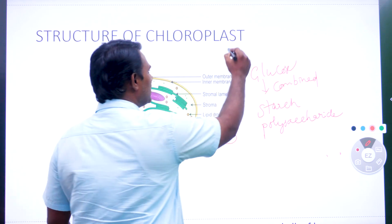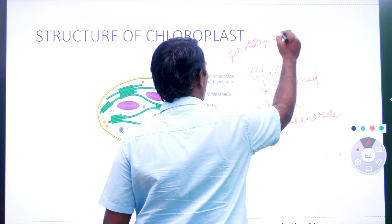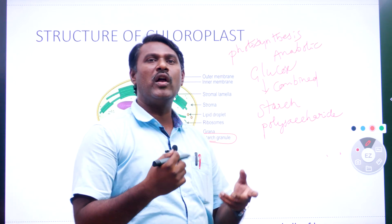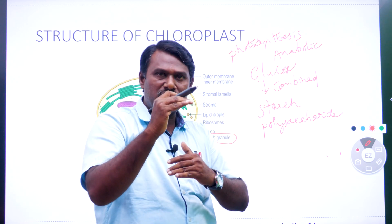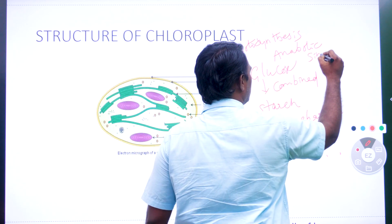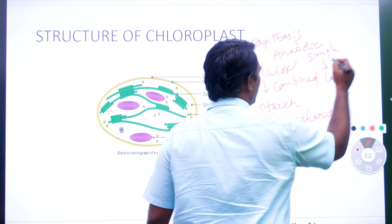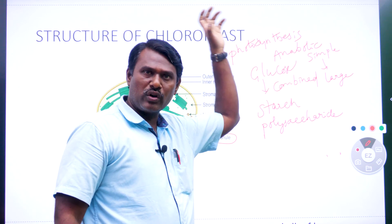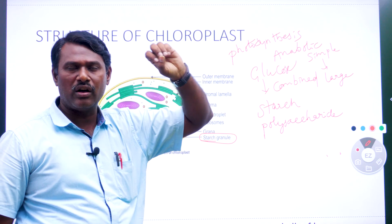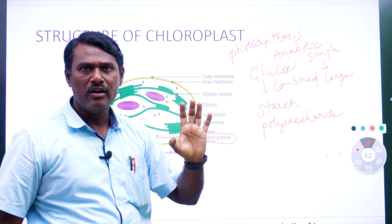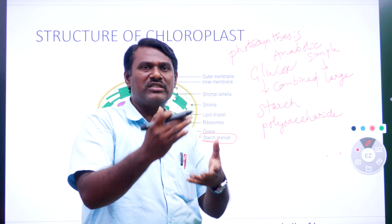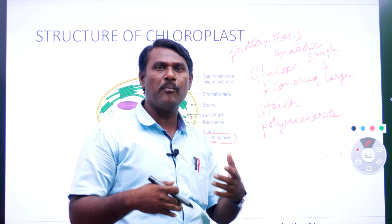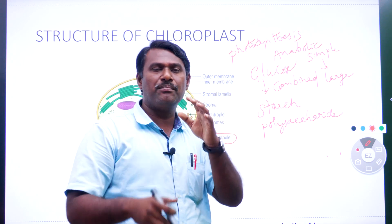Photosynthesis is an example of an anabolic pathway. Anabolism means simple molecules are combined together to form a large molecule. Here, glucose is the monomer — a monosaccharide — which is one end product of photosynthesis. These glucose molecules combine together to form the large molecule starch. This conversion of simple molecules into a large molecule is called anabolism or anabolic pathway, which is one of the processes of metabolism.